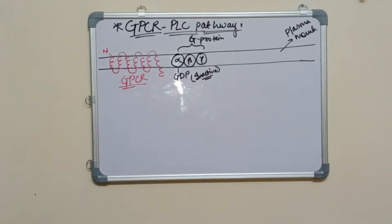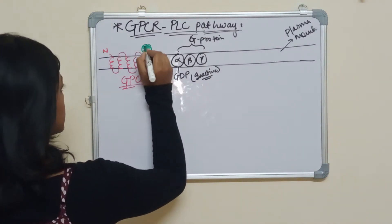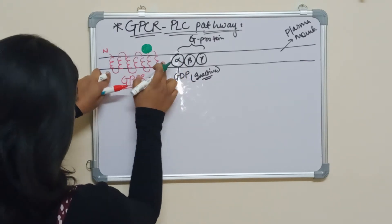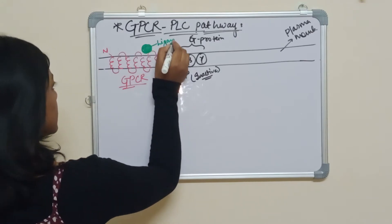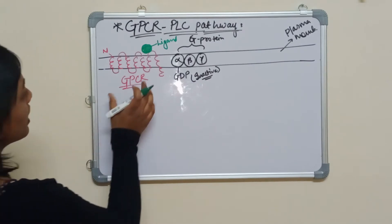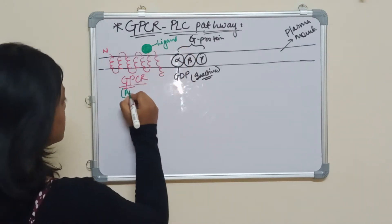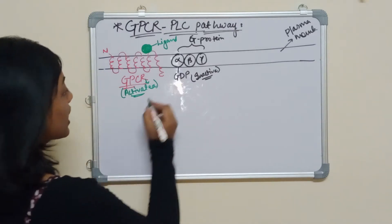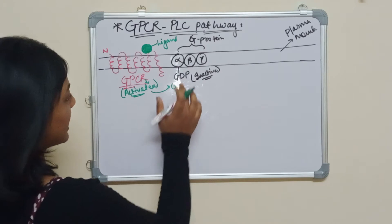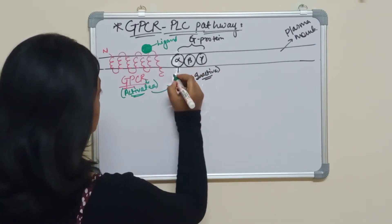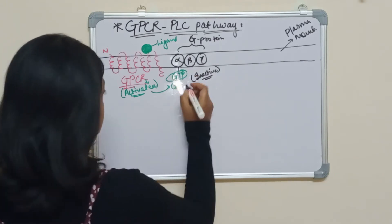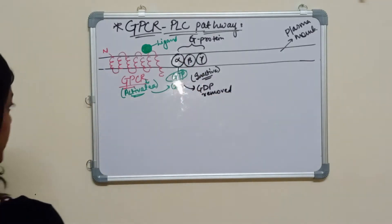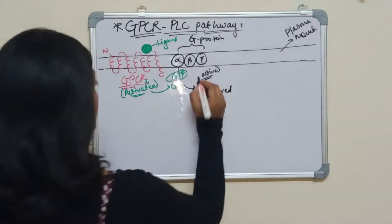When a ligand — the first messenger — comes in and binds to the GPCR, the receptor gets activated. Once the ligand is bound, the activated GPCR will exchange GTP onto the alpha subunit, removing the GDP. Once GTP is bound to the alpha subunit, the G protein becomes active.